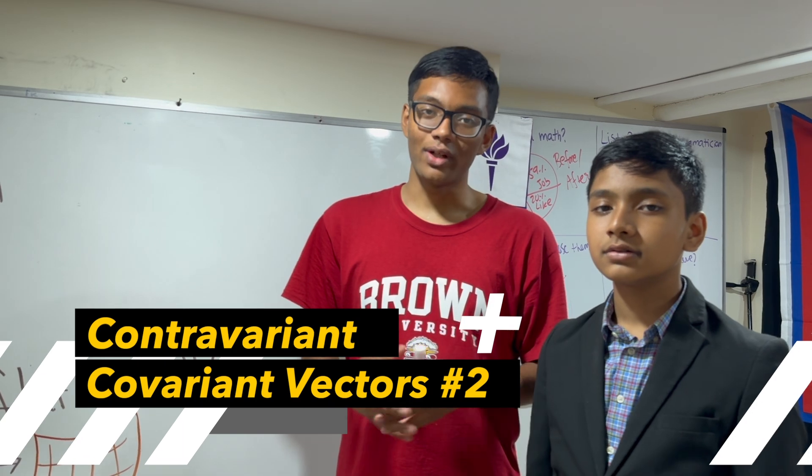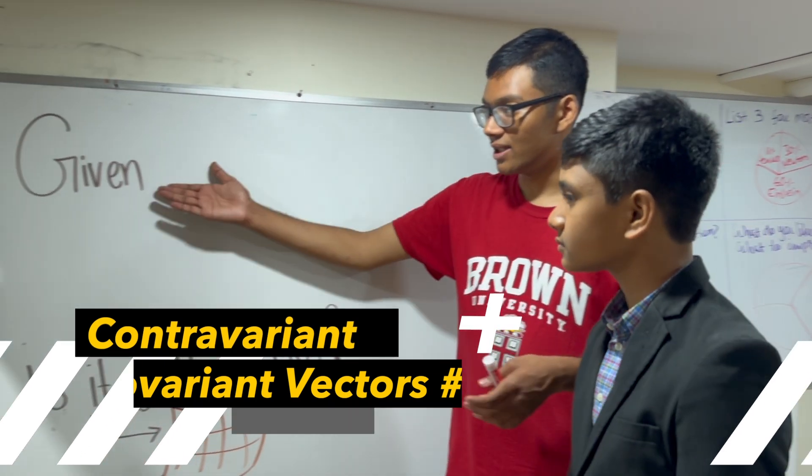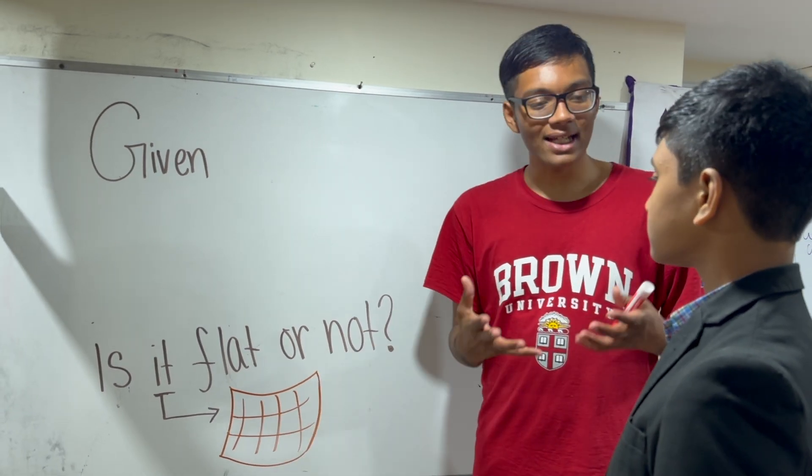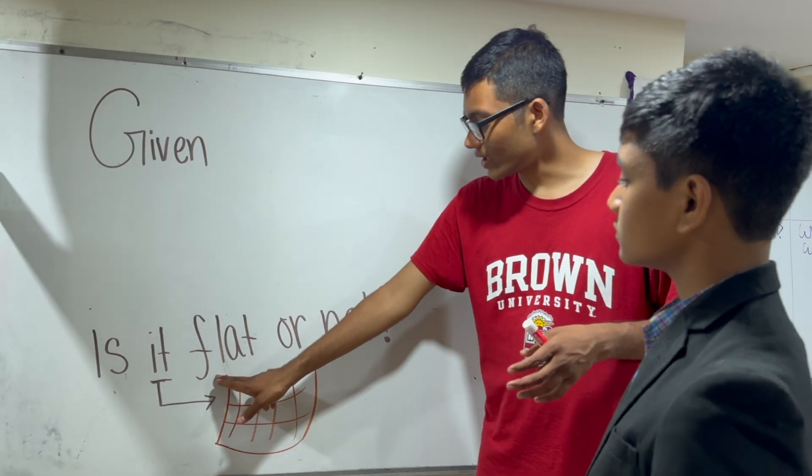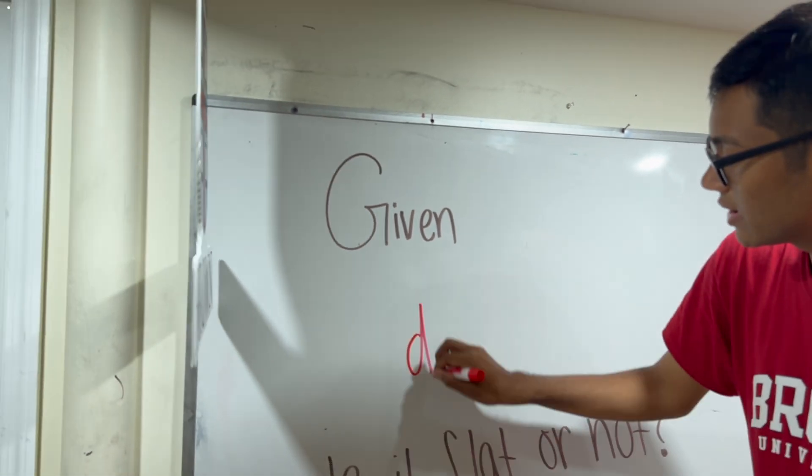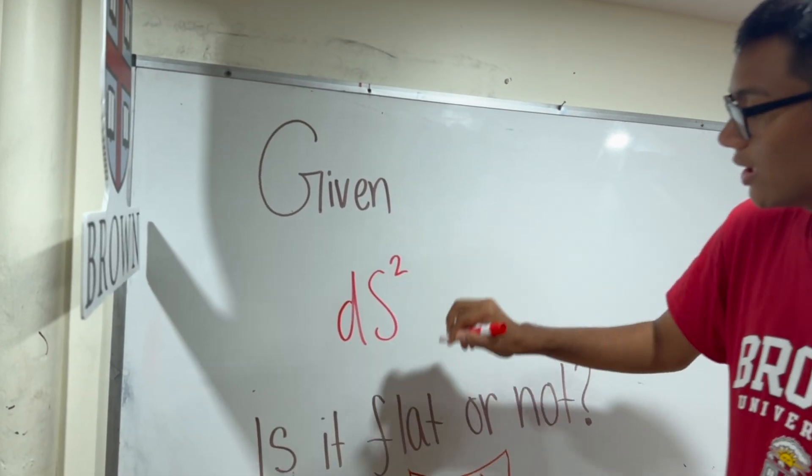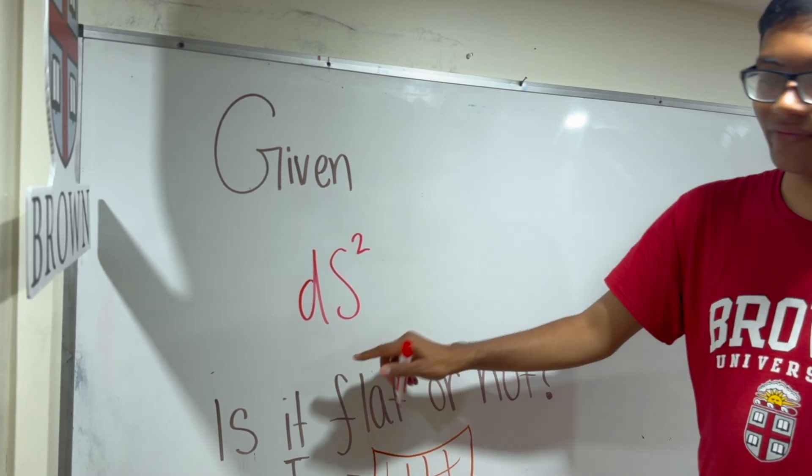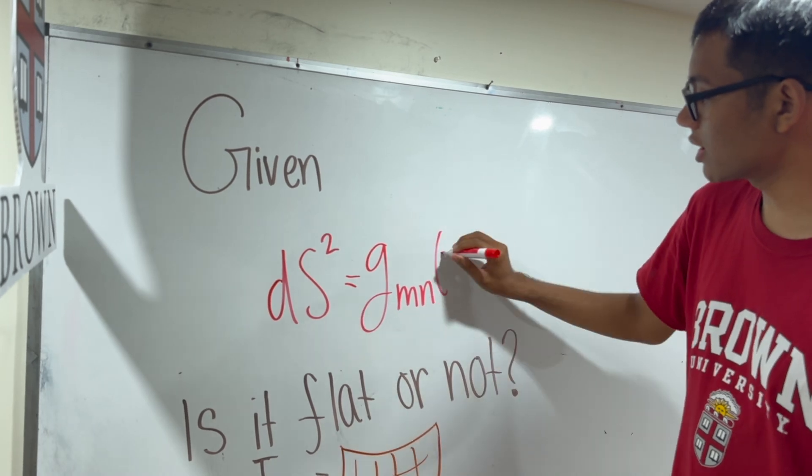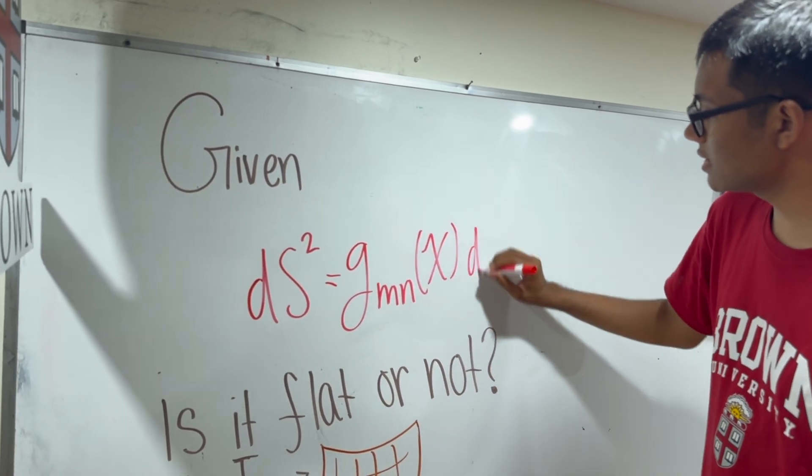We begin with a simple question. If you can tell me how long every vector on a given surface is, can I tell you if that surface is flat or not? Given the metric, in other words, if you tell me how long every vector on a manifold is, you tell me what the metric for that manifold is.